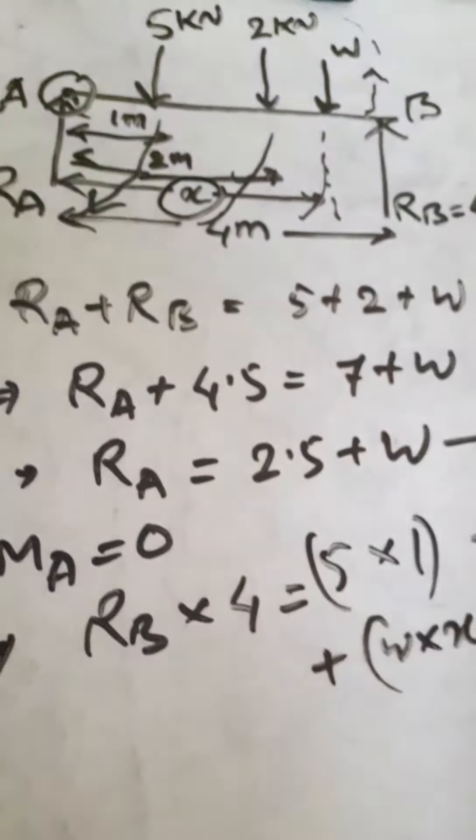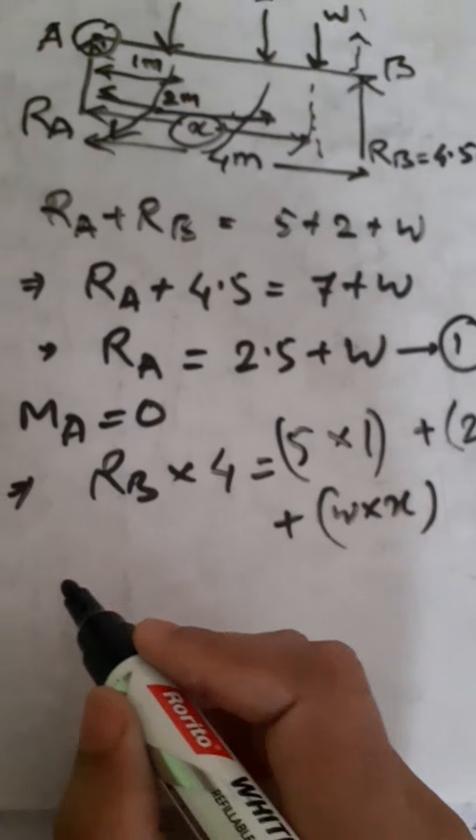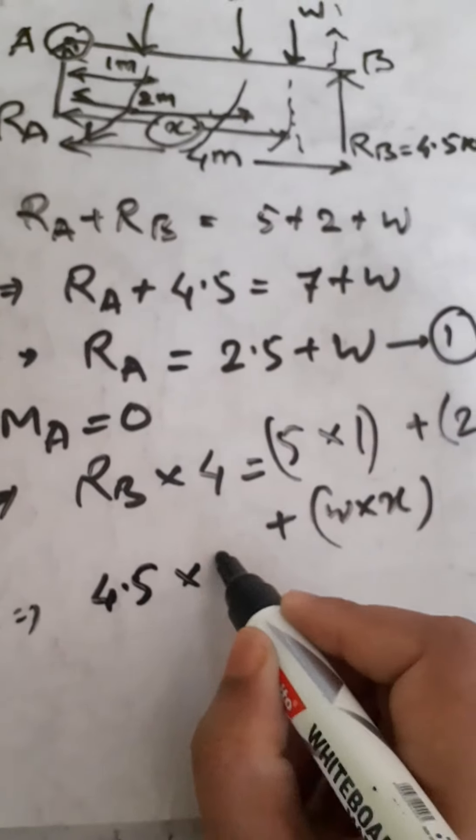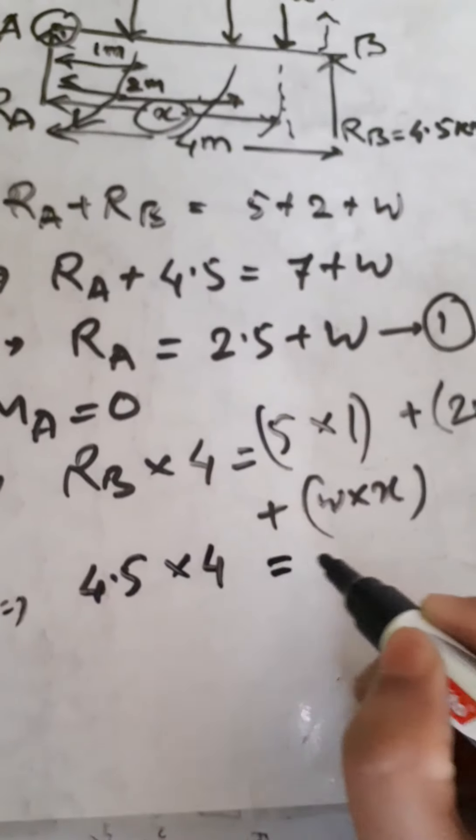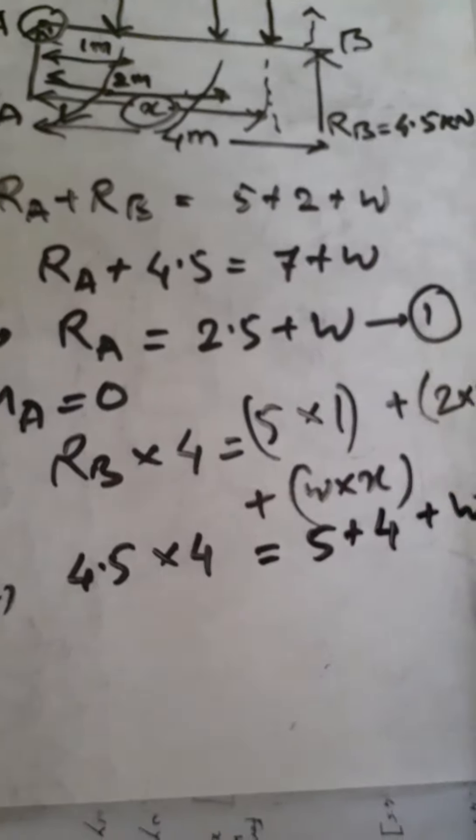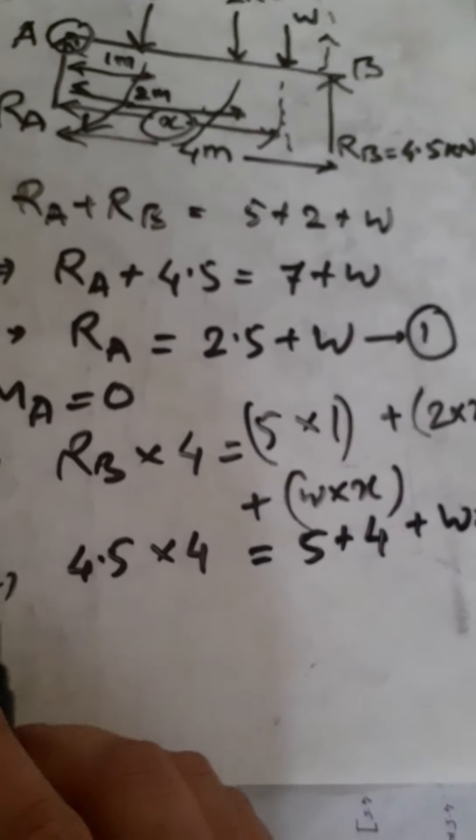We have RB value as 4.5, so 4.5 into 4 equals 5 plus 4 plus Wx. That's 9 plus 4, which gives us 18 equals 9 plus Wx.